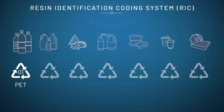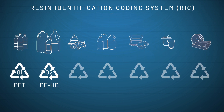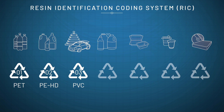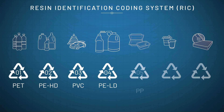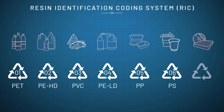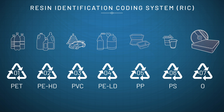Category 1 comprises PET, used for example in drinking bottles. Category 2: high-density polyethylene for hard bottles. Category 3: PVC for toys. Category 4: low-density polyethylene for shampoo bottles. Category 5: polypropylene for food packaging. Category 6: polystyrene for yoghurt cups. And finally, Category 7 contains other plastics, such as polyurethane, for mattresses.